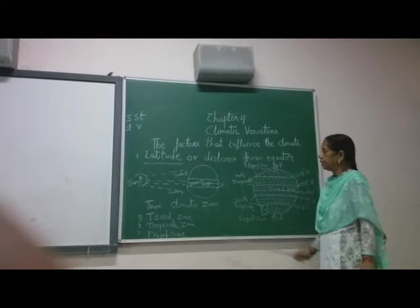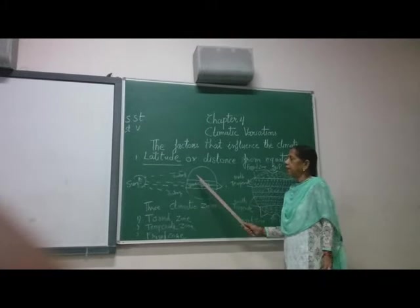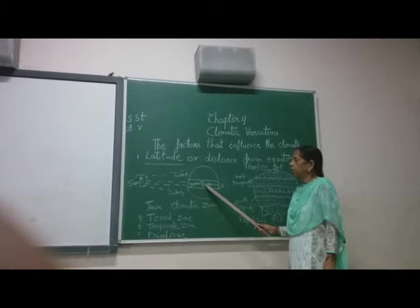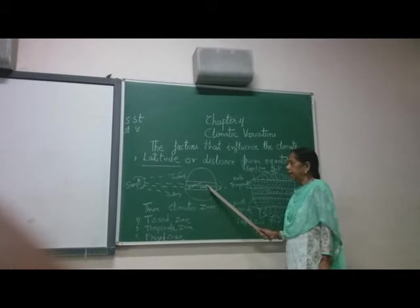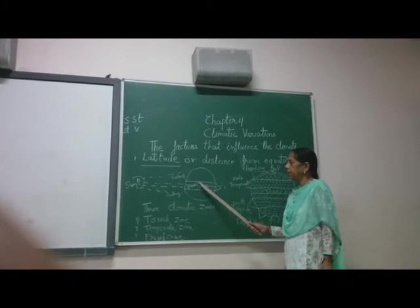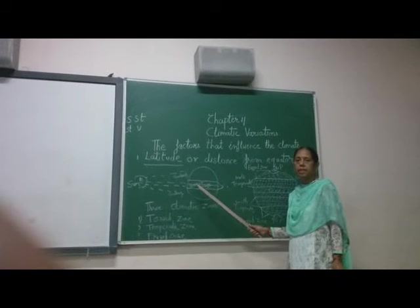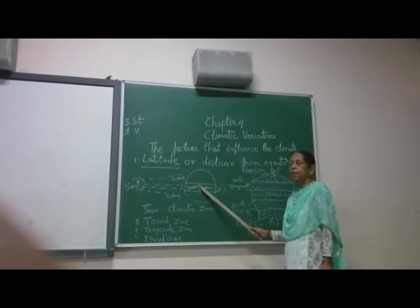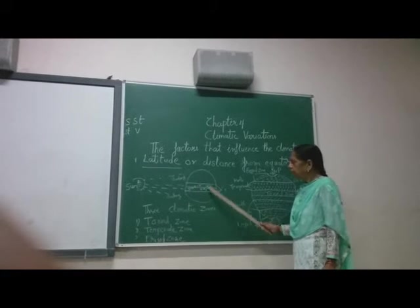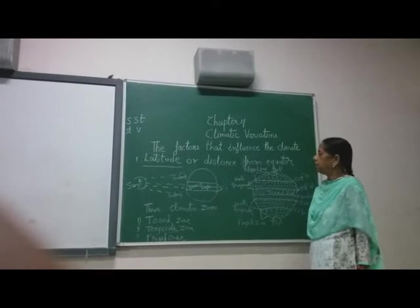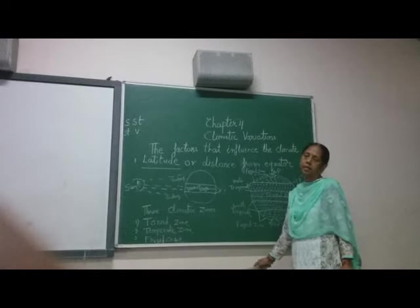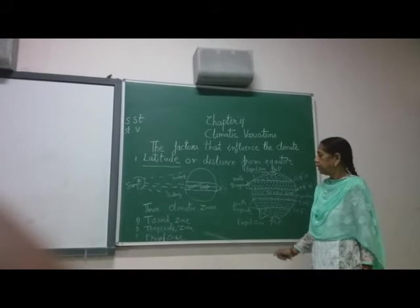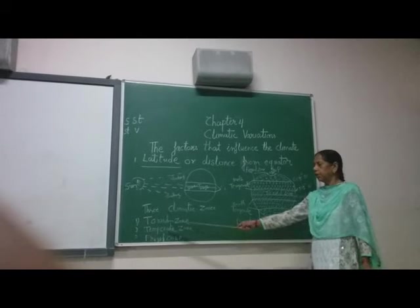Some places receive the direct rays of the sun, which means there is too much heat. The middle part of the earth, which is related to the equator, receives the most sunlight, so it is the hottest. According to this, the climatic zone is divided into three parts on the earth.